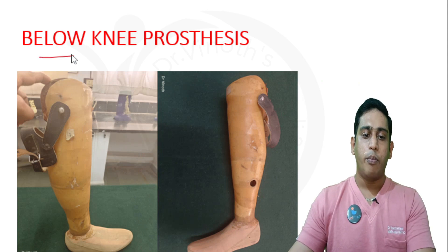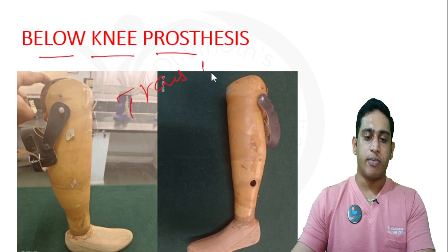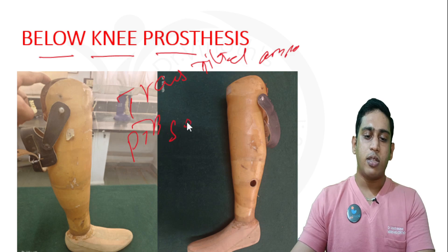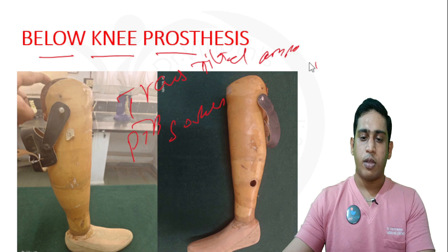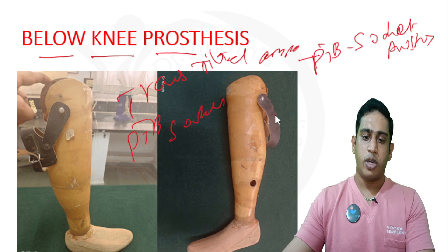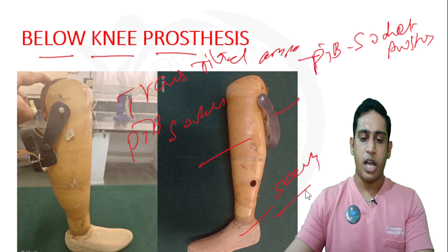Coming to below-knee prosthesis for transtibial amputation or below-knee amputation — this type is called the Patellar Tendon Bearing (PTB) socket type prosthesis. There is also a suspension belt, a wooden shank, and the terminal part is a SAC foot. In the Indian setup, we prefer Jaipur foot.